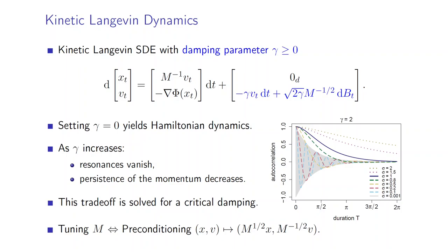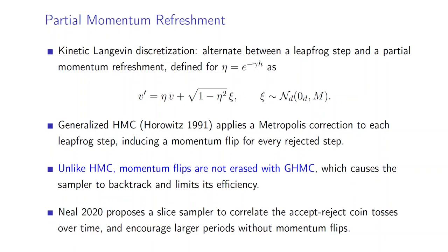Finally, we can notice that the choice of M simply boils down to a preconditioning, since it is just a linear mapping from (x,v) to a preconditioned space. So we can think about M to be identity for the rest of the talk without major origin.